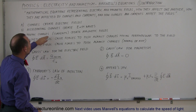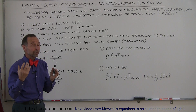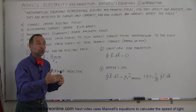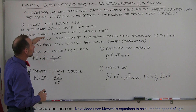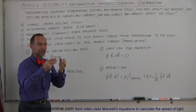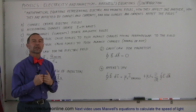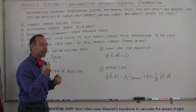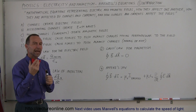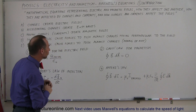Thirdly, moving charges, or currents, create magnetic fields. Whenever you have moving charges — they don't need to be accelerating, they just need to be moving — that constitutes a current. A current is a set of moving charges, and those will create magnetic fields. Magnetic fields can only be created if charges are moving. If charges are not moving, there will be no magnetic field. When charges move back and forth, the magnetic fields will cancel each other over time, so you want movement in a consistent direction to sustain a magnetic field.